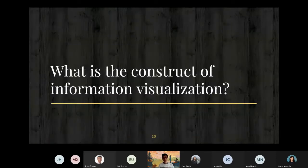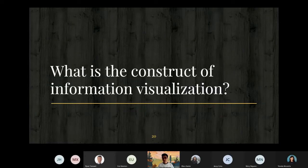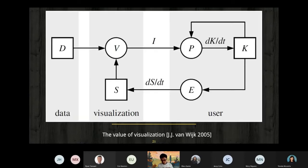What is the construct of information visualization? I already mentioned there's human, machine, and data. How exactly do they work together? Researchers have proposed mental models about visualization. Here you have the data, and on the other end, you have the user. In the middle, you have the machine, which displays the visualization or system. From this data, the system can generate visualization.